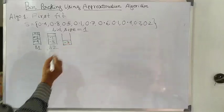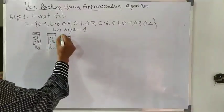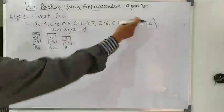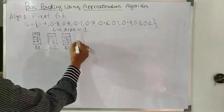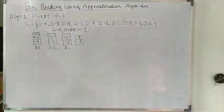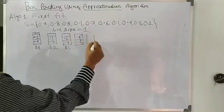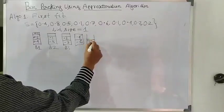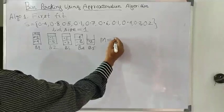Next, 0.7 goes into Bin 3. Trying 0.6 — mismatch. 0.1 is already chosen. 0.4 — no accommodation. So we choose 0.2; but 0.2 can't fit either, leaving part of Bin 3 vacant. Then 0.6 is not yet allocated, so it starts — along with 0.4 — filling Bin 4 completely (0.6 + 0.4 = 1.0). Finally, 0.2 goes into Bin 5. Total number of bins for First Fit is five.